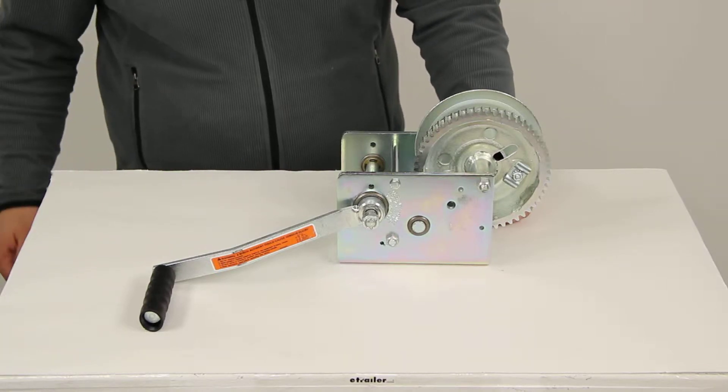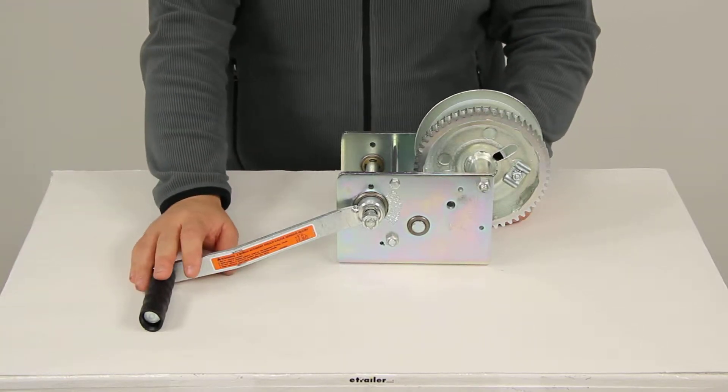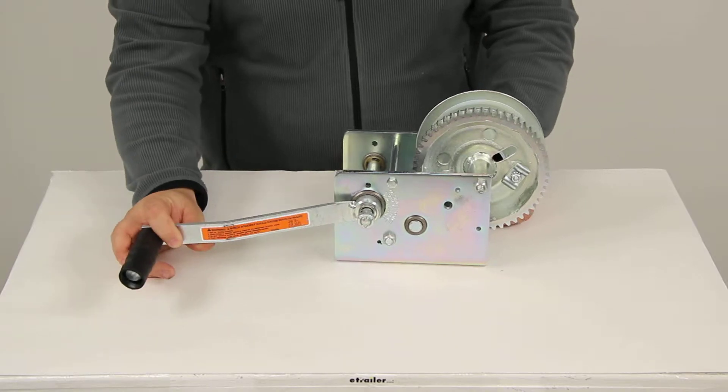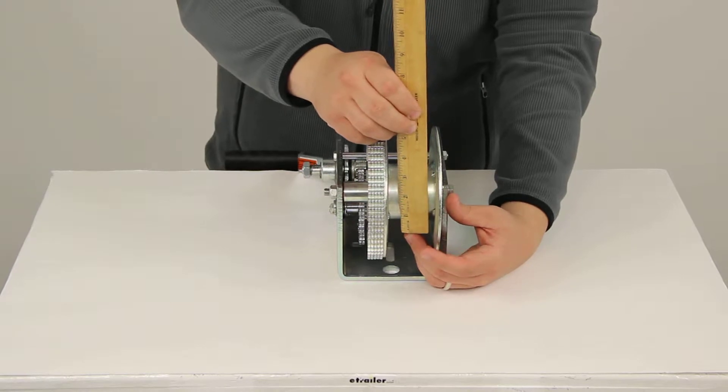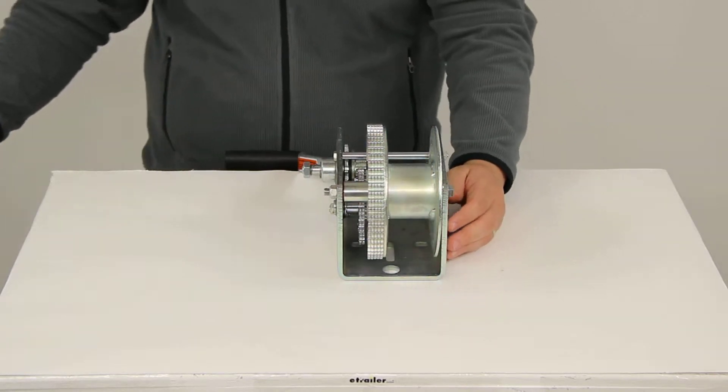Today we'll be reviewing part number DL15721. This is the Dutton Lanson brake winch, rated at 2,500 pounds. Our drum hub is going to give us a diameter of 2.5 inches. This can be used with a cable or with a strap.